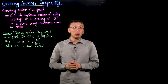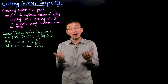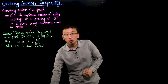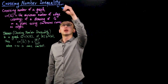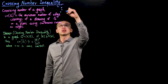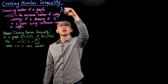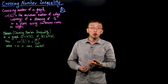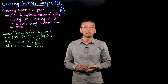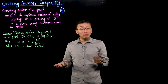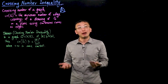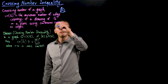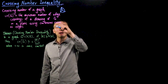What is the crossing number of a graph? If I give you a graph, sometimes it's possible to draw the graph on a plane without crossings. For example, the complete graph on four vertices can be drawn on the plane without having any pair of edges crossed. Such a graph is called a planar graph. But sometimes it's not possible, and the classic example is K5, the complete graph on five vertices.